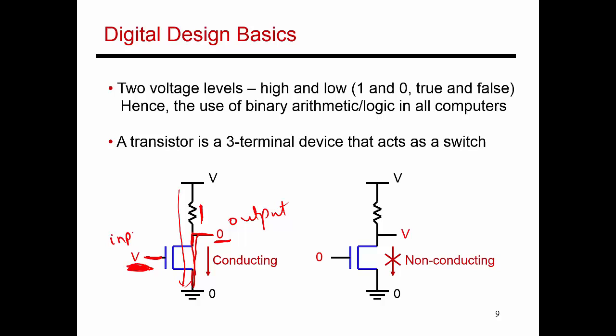This voltage here is my input voltage. In the opposite scenario, if my input voltage is 0, the transistor is not conducting. There is no current flowing through the transistor. It's essentially an open circuit. If I'm measuring my output at this point, I'm sampling the voltage here, which is nothing but the high voltage V.